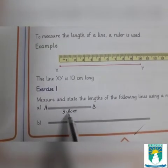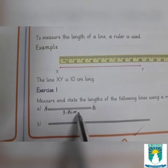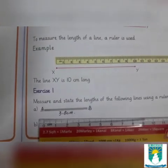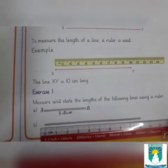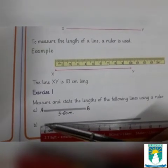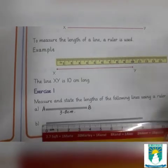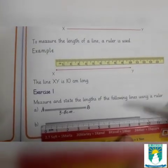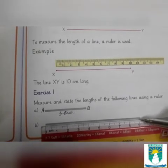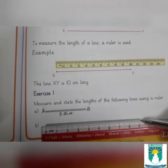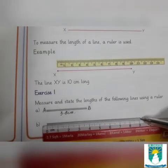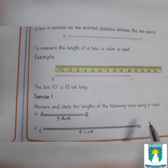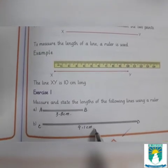So line AB is three point eight centimeters. Similarly, we will measure the other line. Place your ruler on the first end of the line and see where it finishes. It is on 9.1. So line CD is 9.1 cm.